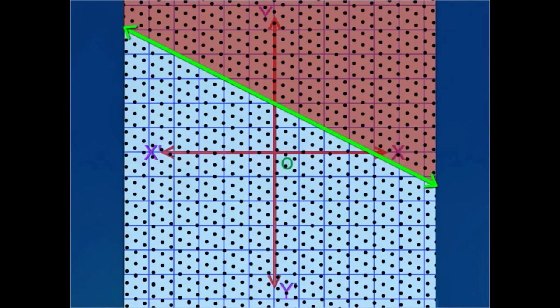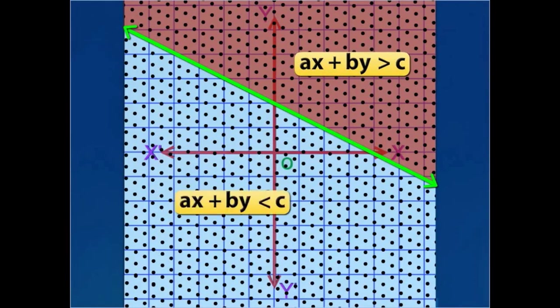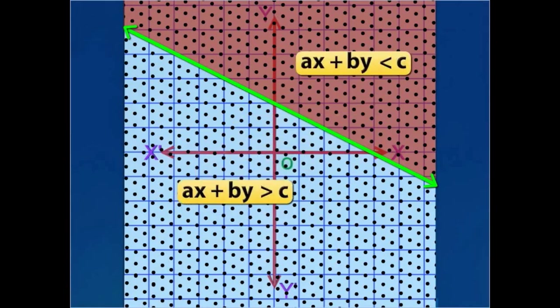The other two sets of points represent the inequalities ax plus by is greater than c, and ax plus by is less than c, and vice versa.